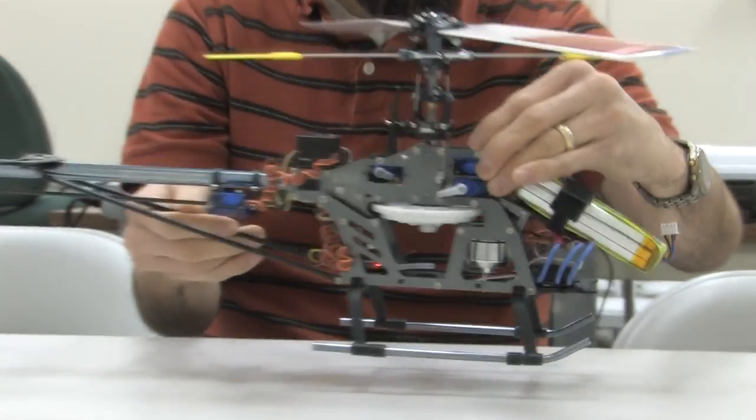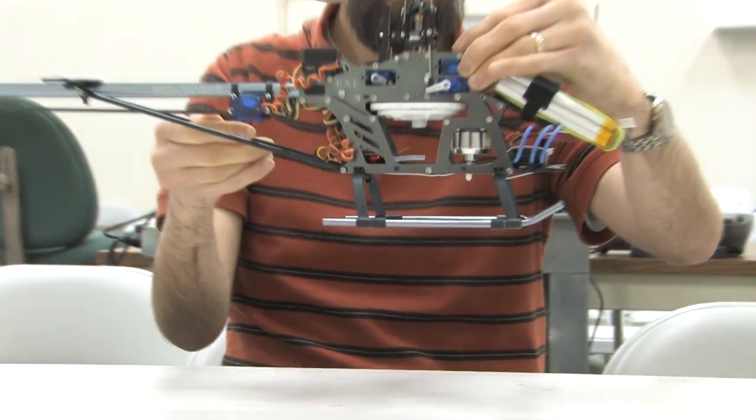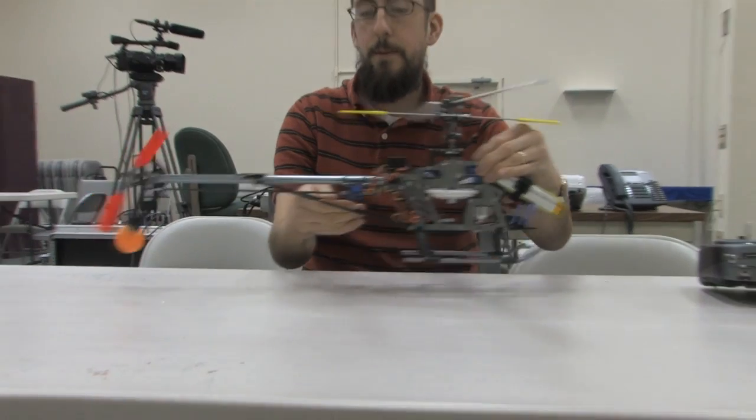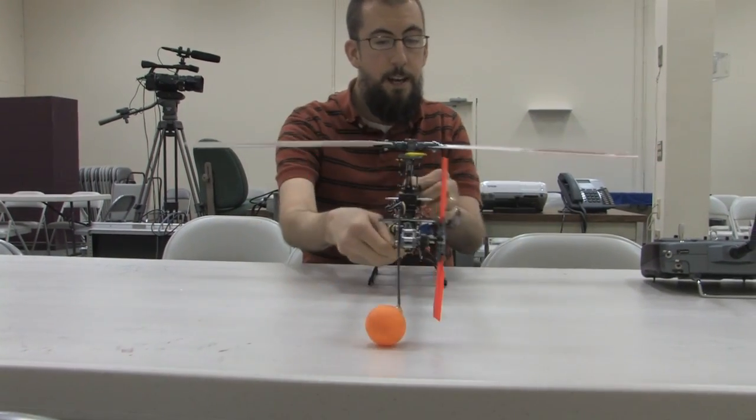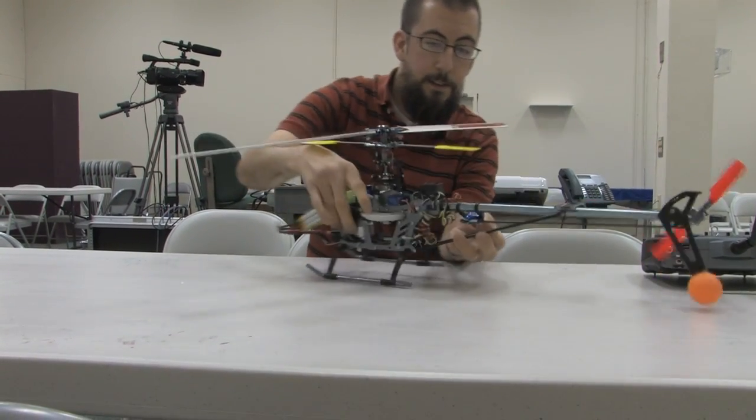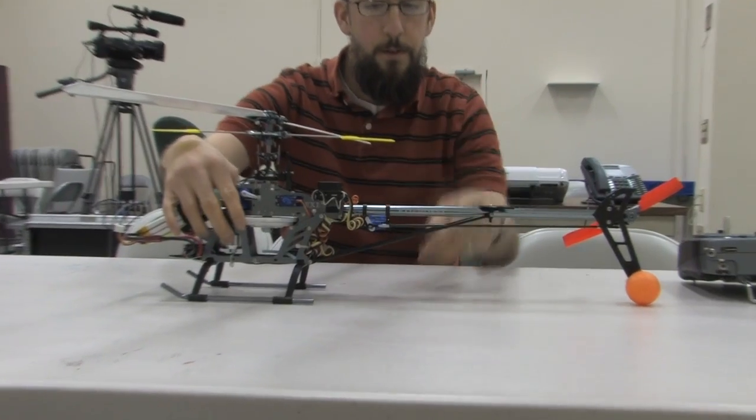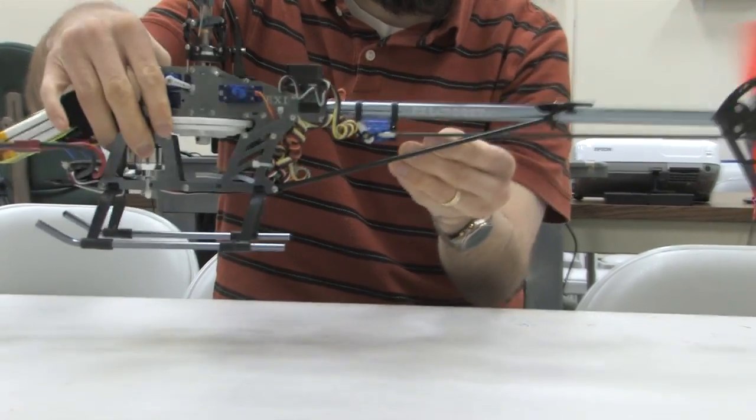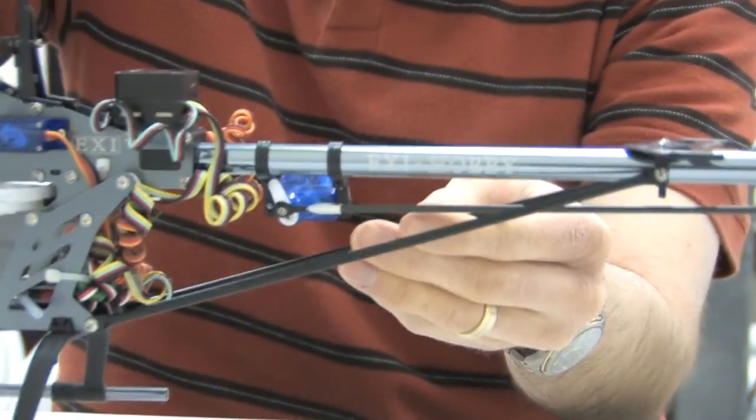So when I point the helicopter in this direction, even if wind blows it, this gyro will adjust the tail as necessary to keep it straight. And you can see, if we turn around here so you can see this tail servo, when I move this back and forth, it's making those adjustments, trying to straighten it out. And that's the gyro.